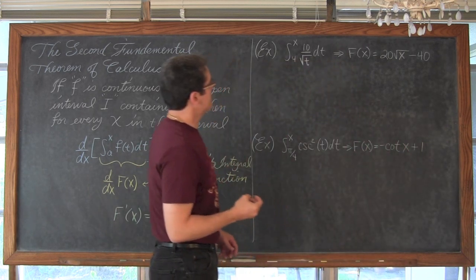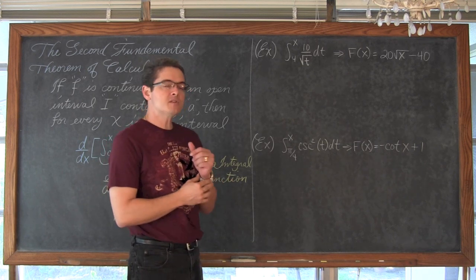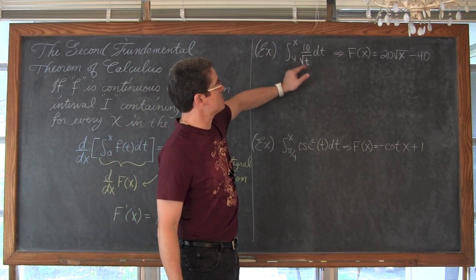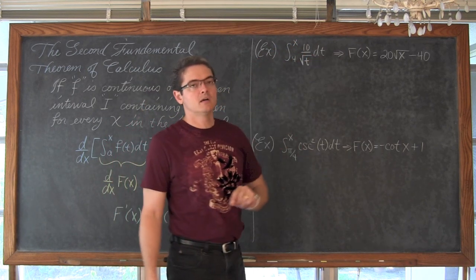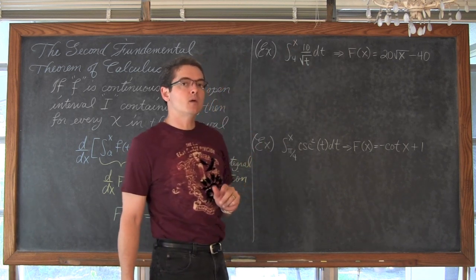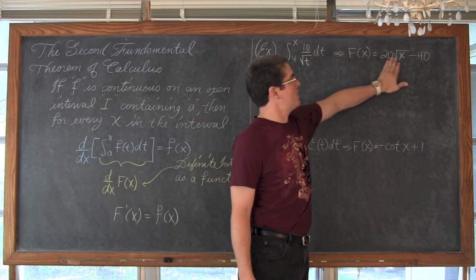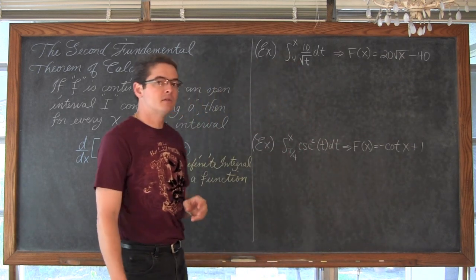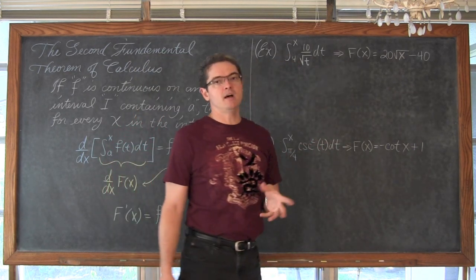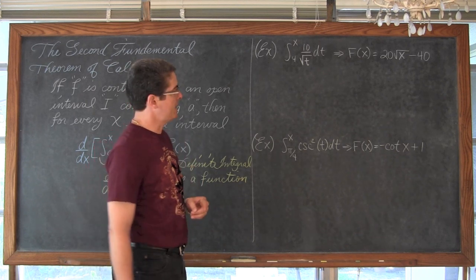Well let's see if that actually works — of course it is going to. In a previous video we talked about finding the definite integral of 10 over the square root of t dt from 4 to x. When we did that we got F equal to 20 square root of x minus 40. Notice we are going to capital F — it is the anti-derivative in terms of x.